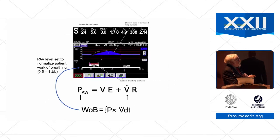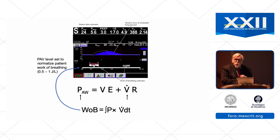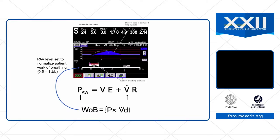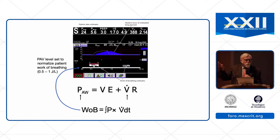With proportional assist ventilation, the ventilator also calculates the work of breathing — knowing flow and pressure, it can calculate work. What we set at the bedside is the level of assist in order to normalize the patient's work of breathing to about one half to one joule per breath. So if the patient's work of breathing is increased, we increase the level of assist; if the patient's work of breathing is very low, we decrease the level of assist.